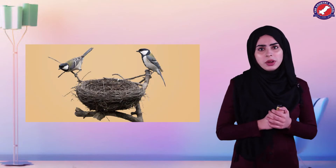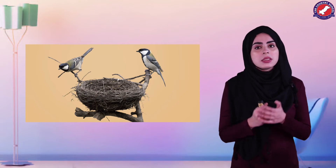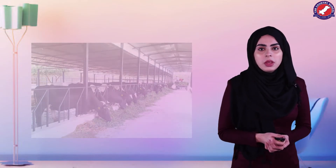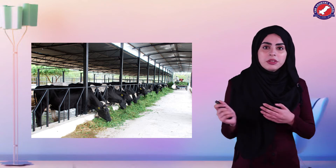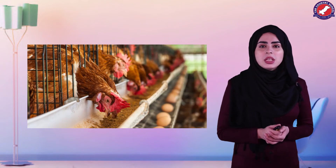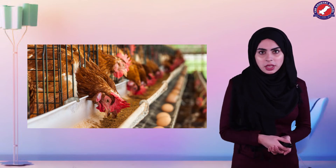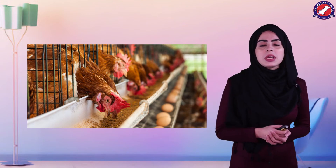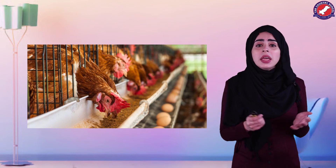Birds apne ghoslon mein rehte hain — I'm sure you all know that nests are seen everywhere. When we keep animals, we make special homes for them. Sheds for cows — normally yeh farms mein banaye jaate hain. Cages for chicken — chicken cages mein gharon mein rakhe jaate hain, aur villages mein bhi is tarah ke special cages banaye jaate hain. Kennels for dogs — as you guys can see here, dogs live in kennels.